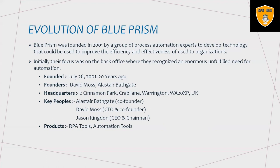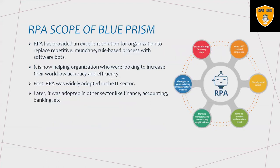They can achieve data extraction, process automation, and many more things using this tool. It is available in two versions: on-premise and cloud. RPA has provided excellent solutions for organizations to replace repetitive, mundane, rule-based processes with software bots. Blue Prism maintains logs for every state, provides 24x7 support, requires no physical robots, and mimics human tasks for existing applications, automating repetitive tasks which human beings perform regularly.